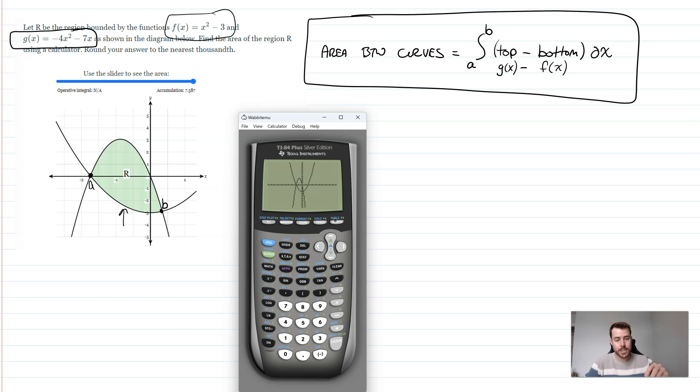So now to get those intersection points, all I'm going to do is I'm going to hit second and trace, which is calc here. And I'm going to go down to number five, where it says intersect. So now, it's going to ask you the first curve and the second curve. Basically, just hit enter twice. And then it's going to ask you for your guess. Now, the guess, I'm going to go to the left, start with this A term here. You're going to hover over roughly where they intersect and click enter.